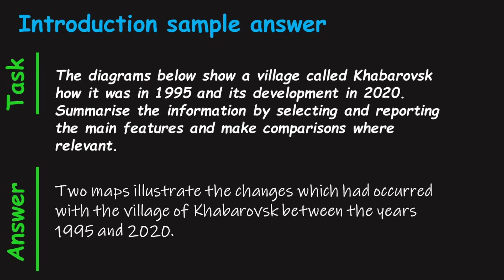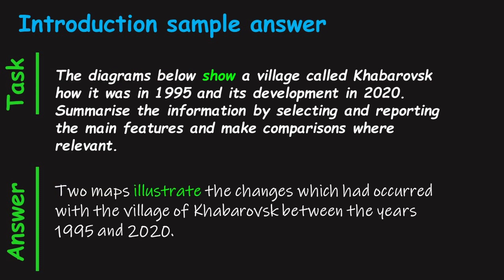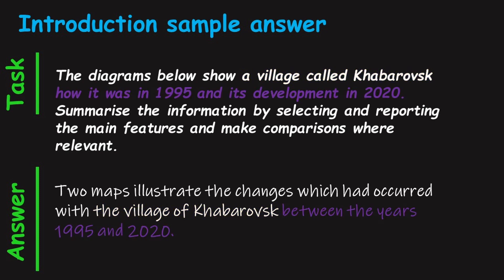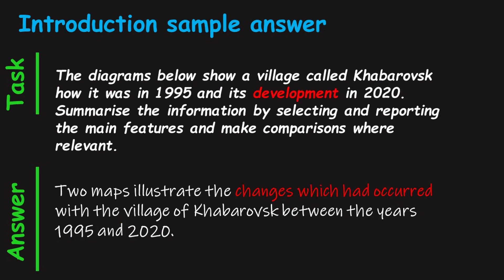I will demonstrate how I paraphrased the task and wrote the introduction, word by word and phrase by phrase. The phrase 'diagrams below' I changed to 'two maps.' Instead of 'show' I wrote 'illustrate.' 'A village called Khabarovsk' I changed to 'the village of Khabarovsk.' 'How it was in 1995 and its development in 2020' was altered to 'between the years 1995 and 2020.' Instead of the word 'development' I used 'changes had occurred.'